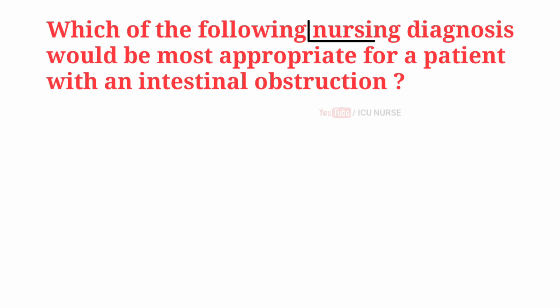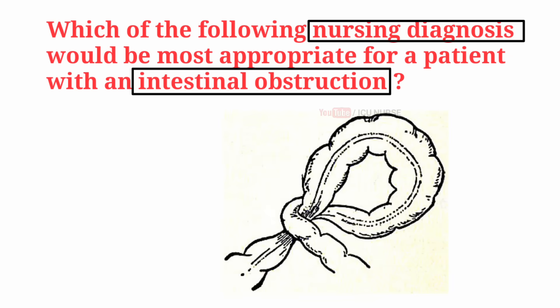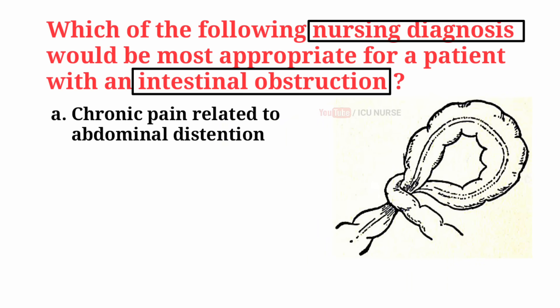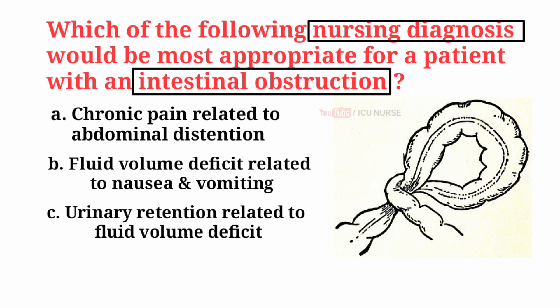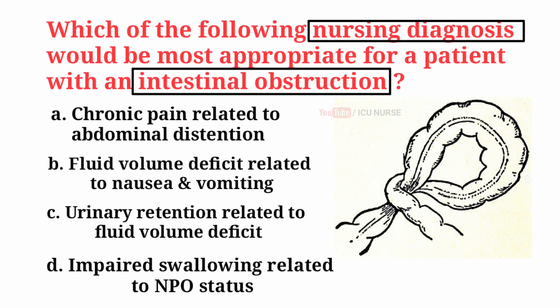Which of the following nursing diagnoses would be most appropriate for a patient with an intestinal obstruction? A. Chronic pain related to abdominal distension. B. Fluid volume deficit related to nausea and vomiting. C. Urinary retention related to fluid volume deficit. D. Impaired swallowing related to NPO — nothing per oral — status.